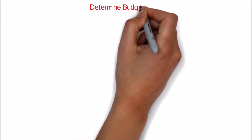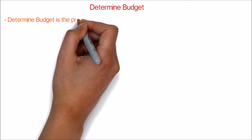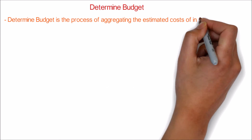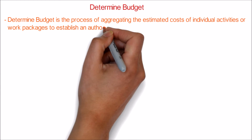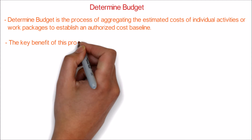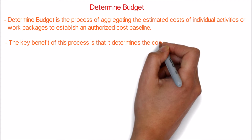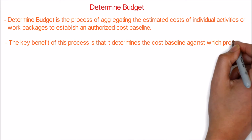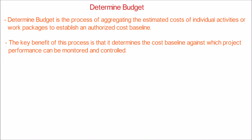Hello! Let's look at the step-by-step process of determining the budget of a project by using the bottom-up approach, which has been widely used. Determine Budget is the process of aggregating the estimated costs of individual activities or work packages to establish an authorized cost baseline. The key benefit of this process is that it determines the cost baseline against which project performance can be monitored and controlled.